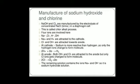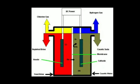Chlorine gas is given off at the anode and hydrogen gas at the cathode. Sodium hydroxide solution is formed near the cathode. In this diagram you can see the anode is a positively charged electrode and the cathode is a negatively charged electrode.